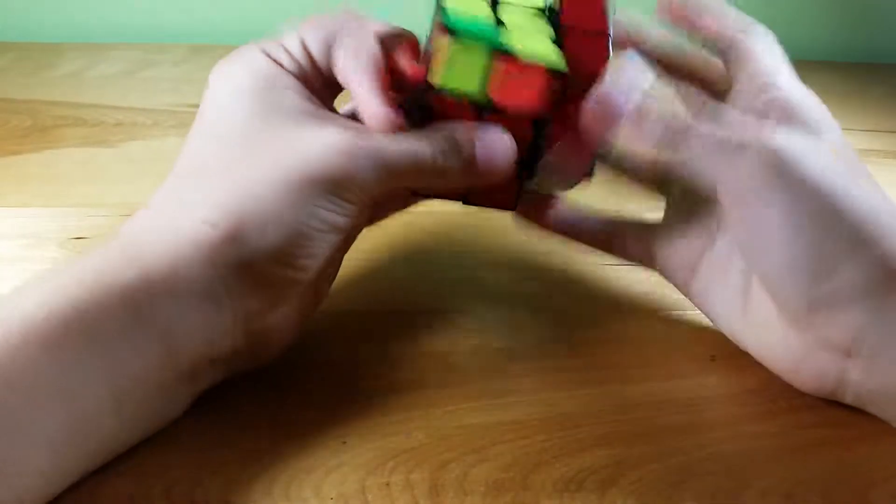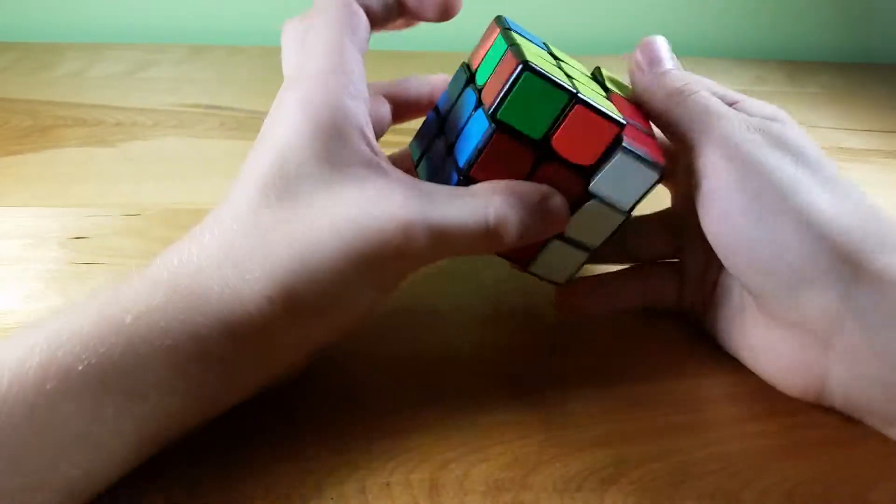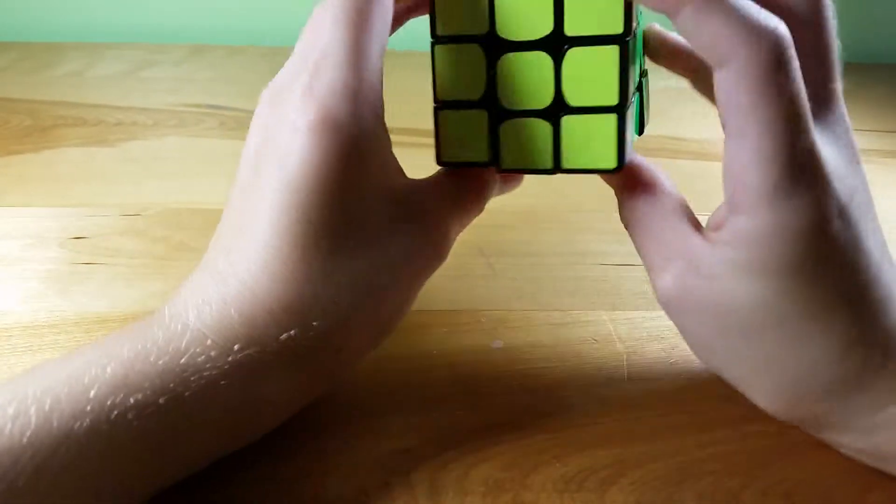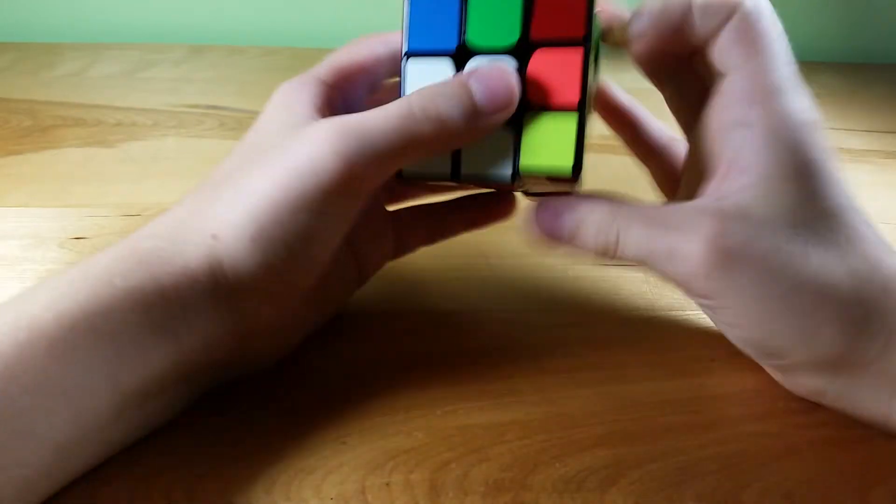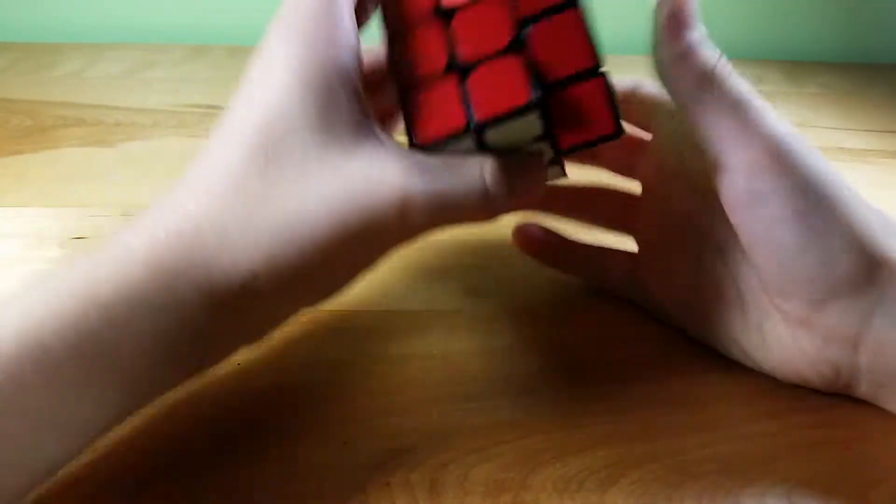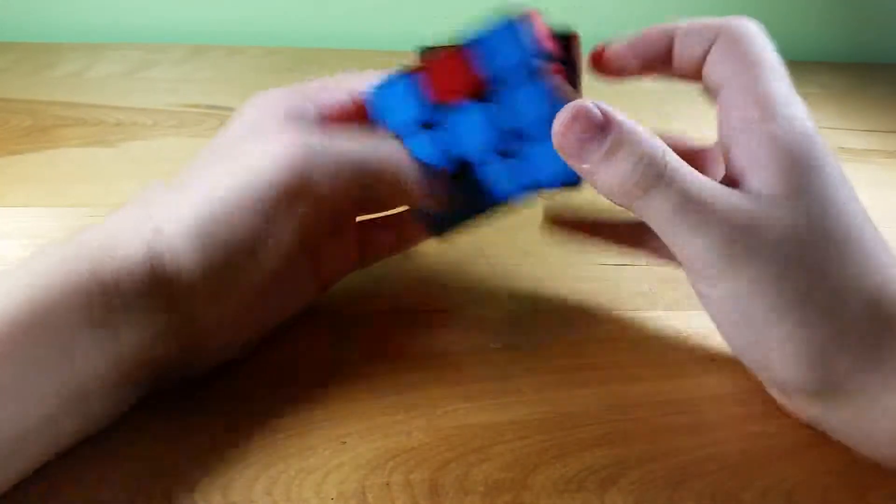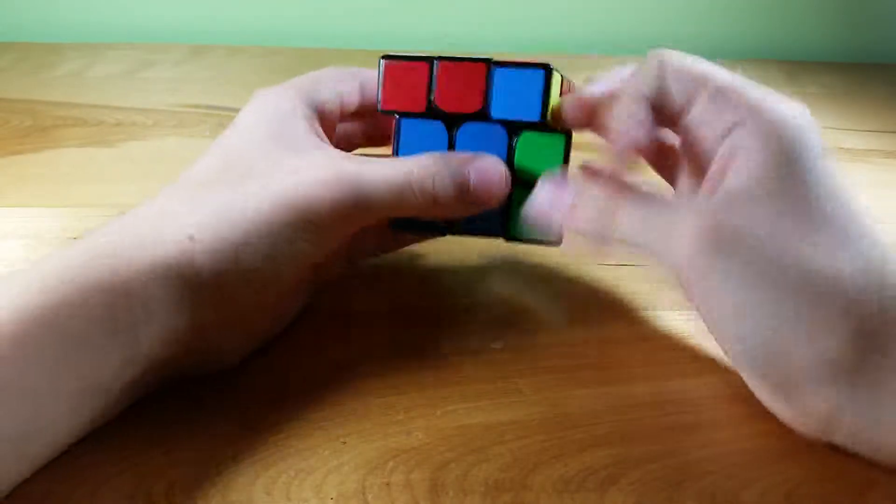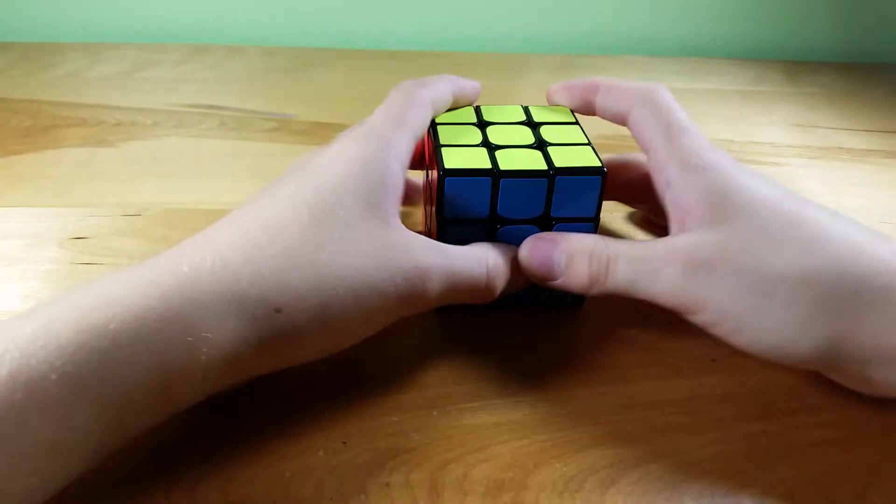So I will OLL, Sune, Sune, Sune, and then A perm again to orient or get the corners in position, and then another U perm.